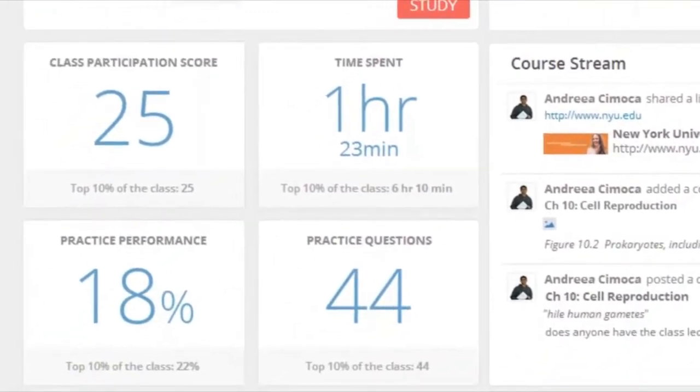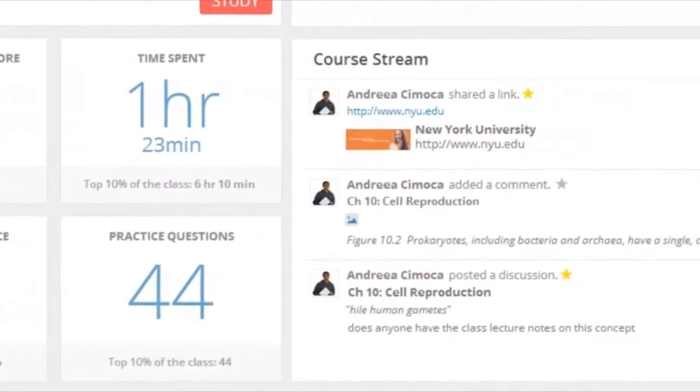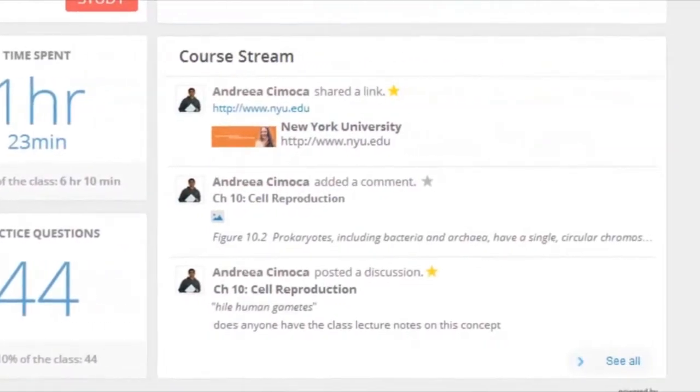On the lower left, student engagement metrics share with students how they're doing in their practice and participation, as well as the areas that they need to focus on. And on the lower right, the course stream summary provides a quick look at the most recent posted materials, including discussions to help increase peer-to-peer collaboration, as well as individual activity.